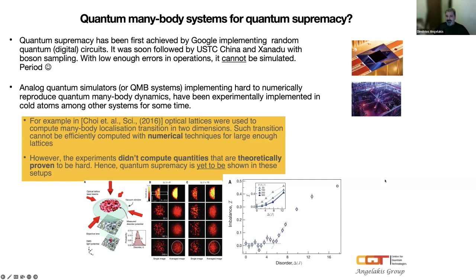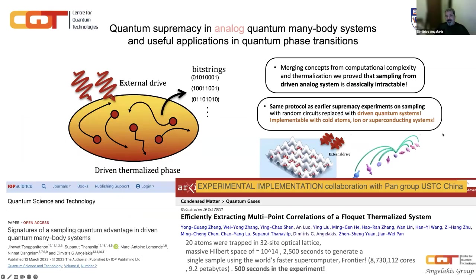I have one example here on this many body localization transition experiment in two dimensions, which it was kind of clearly shown that you cannot really follow up with experiment with theory, whatever theory you're using. It's just impossible to really follow up. However, our computer science colleagues or friends find this approach slightly difficult to digest. It's very different communities. So we speak very different languages.